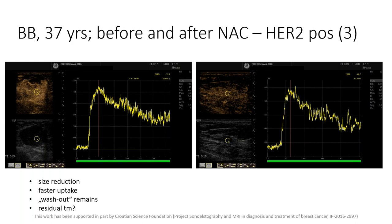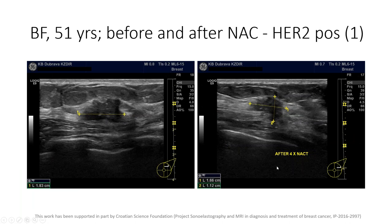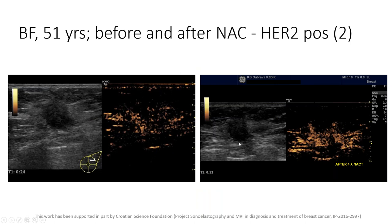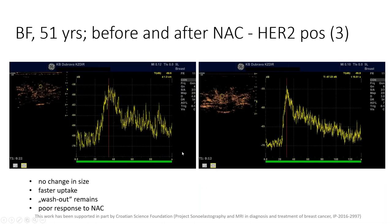In another example, there is no significant change in tumor size after neoadjuvant chemotherapy. Peak intensity is achieved even faster than before treatment, and the washout type of time-intensity curve remains. This would suggest poor response to neoadjuvant chemotherapy — a conclusion confirmed by our pathologists.